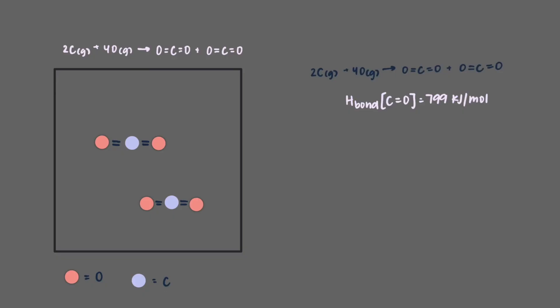That means that the energy of the second step, the bond-making step, is equal to negative 4 times the bond enthalpy of the carbon-oxygen double bond. This is equal to minus 3196 kilojoules per mole.